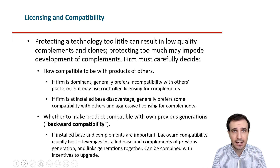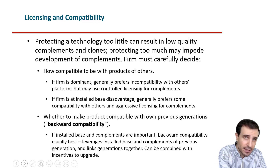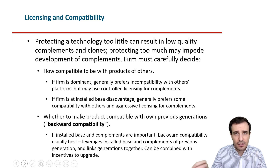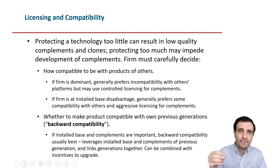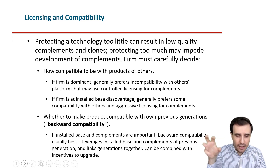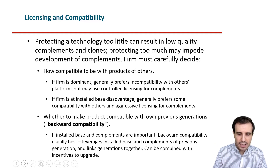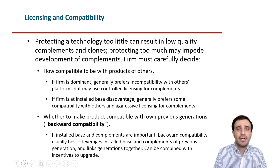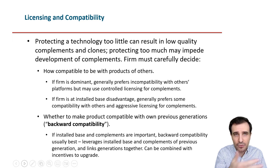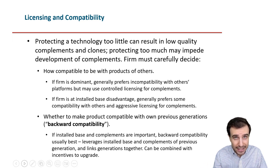When we define our deployment strategy, we need to consider how compatible or incompatible we want to make our technology. For example, if there is already a technology with a very solid installed base, we may decide to make our new product compatible with it. A lot of producers of electronic devices and personal computers made them IBM compatible because they wanted to leverage on IBM's installed base. Similarly, many gaming companies make games compatible with more than one gaming console, making the library much more appealing to consumers.